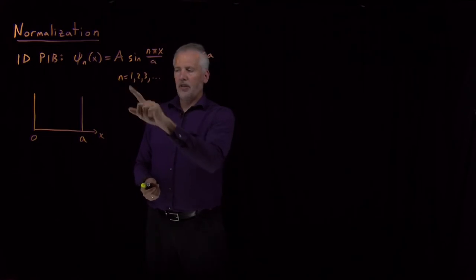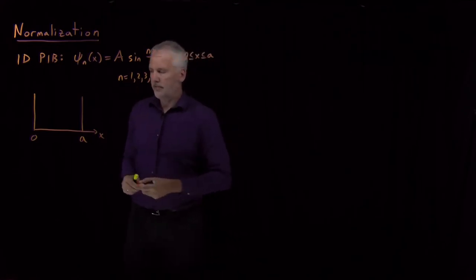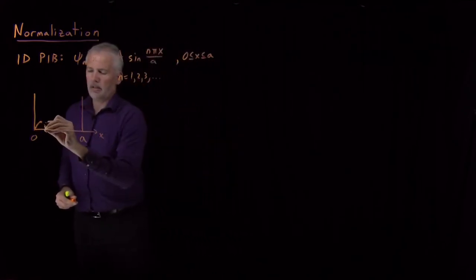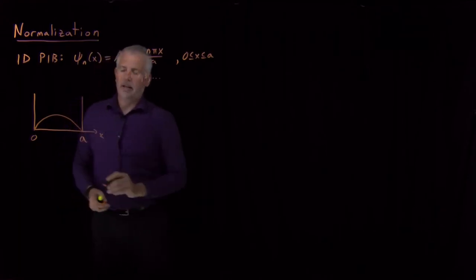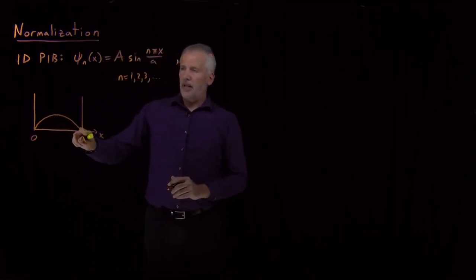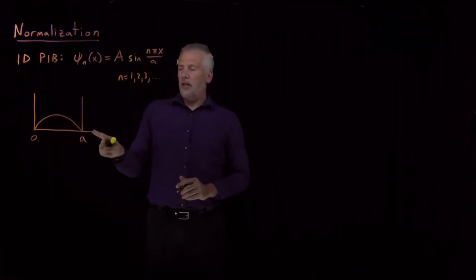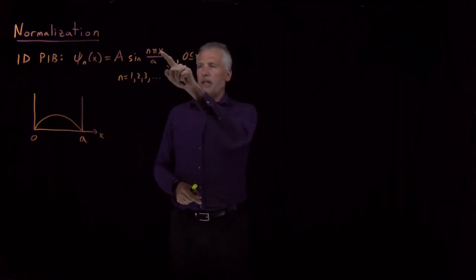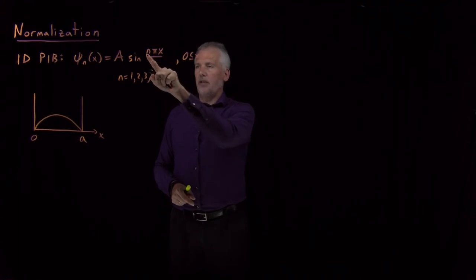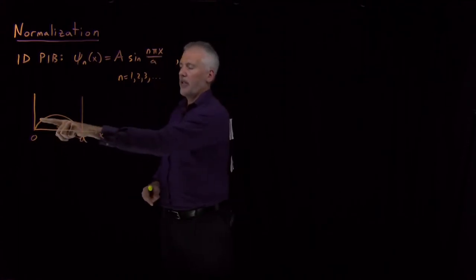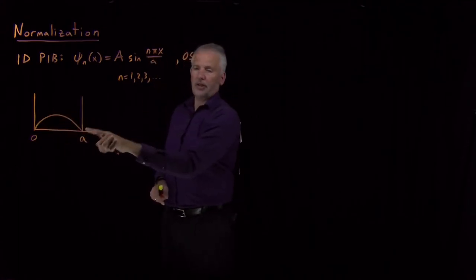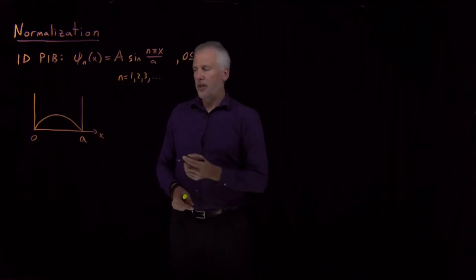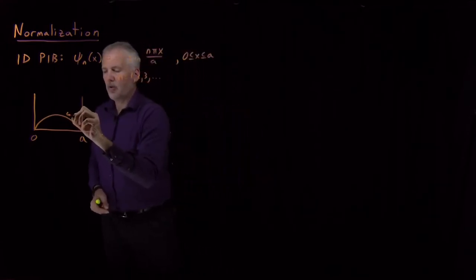So if I take the n equals 1 solution, sine of 1πx over a goes up and comes down. When n is 1, and when I plug in x equal to the edge of the box a, so x over a cancels, and if n is 1 I just have sine of π, and so that's the first time this sine function has come back down and hit 0. So that would be a graph of ψ sub 1.